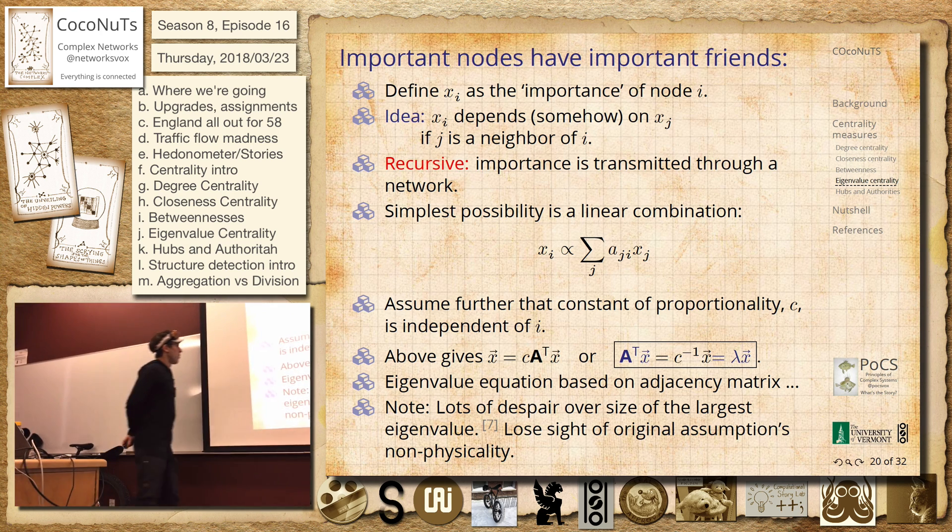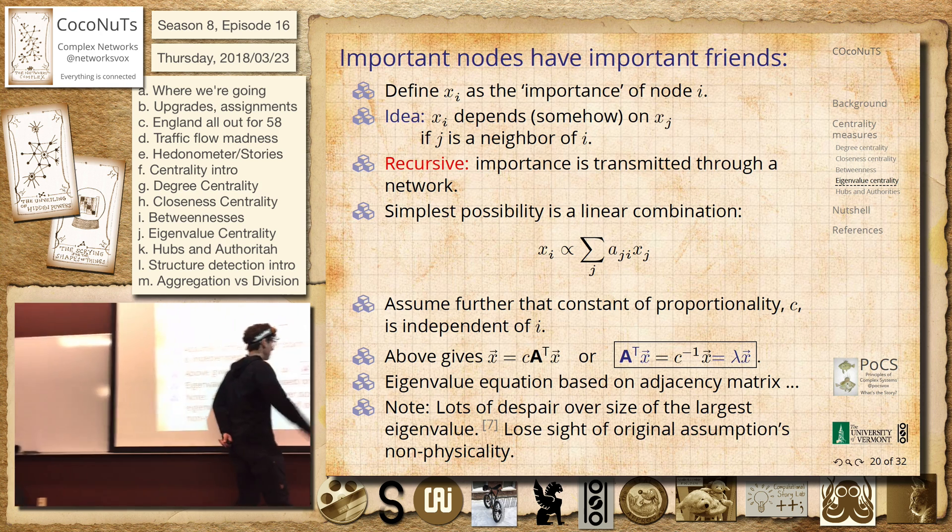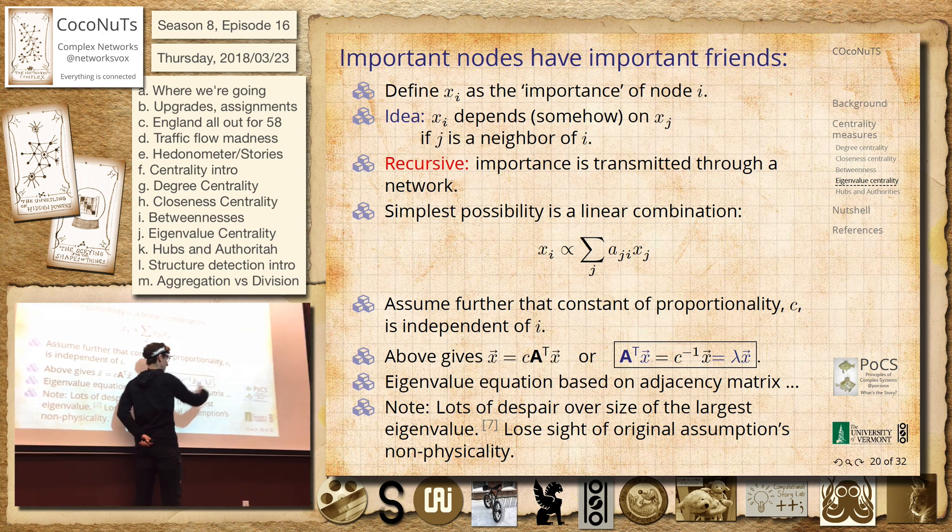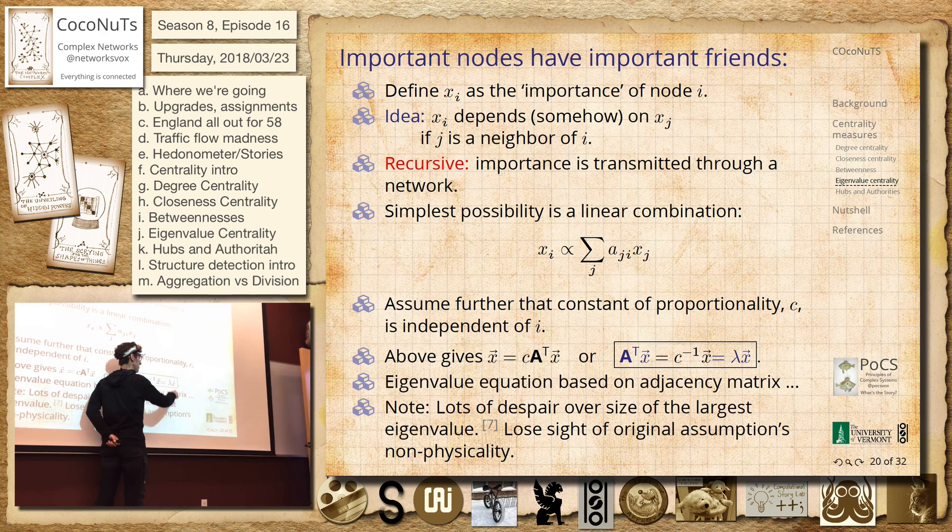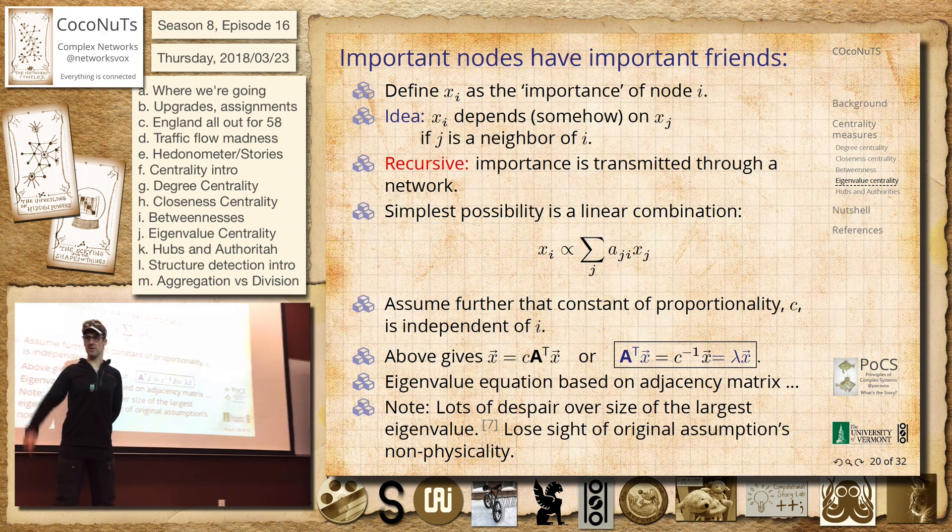Anyway, it will give you, so let's say we take the largest eigenvalue, because in general that's sort of going to be the most important one. And we take the vector associated with that. That's going to have entries in it.